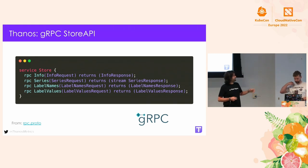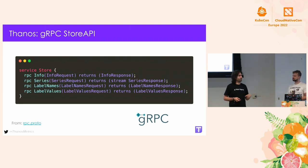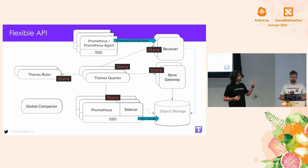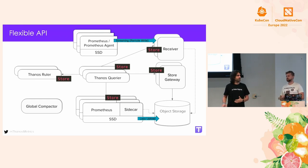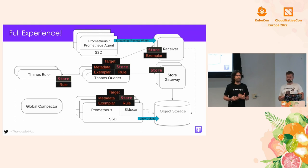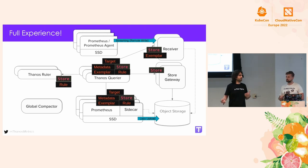Thanks to the Store API, which is a flexible API, each component exposes this API and from the Thanos Query perspective it is seamless. The Store API covers not just metrics but all other metadata — we can get exemplars, alerts, and recording rules. With the flexibility of the Store API we can interchange all these components.